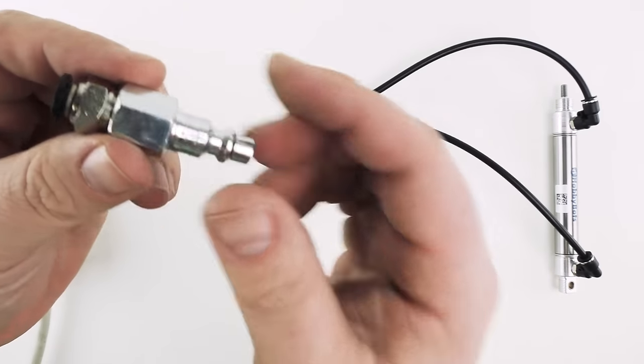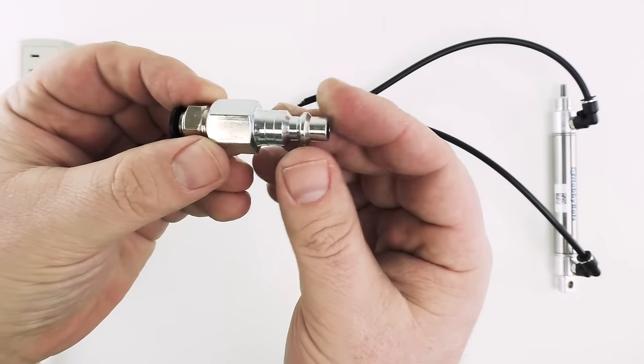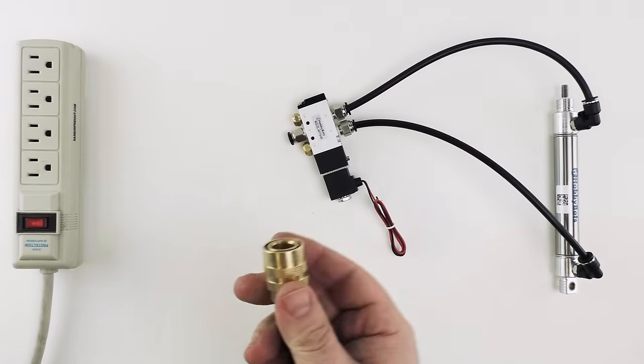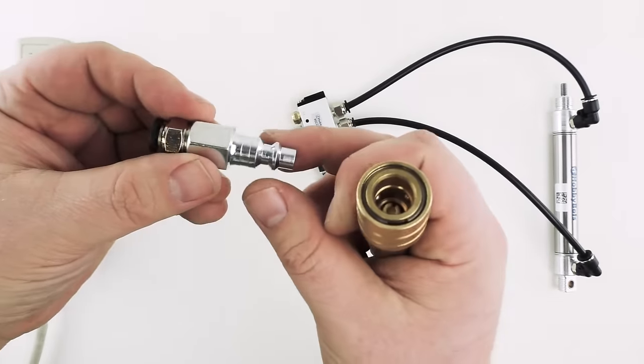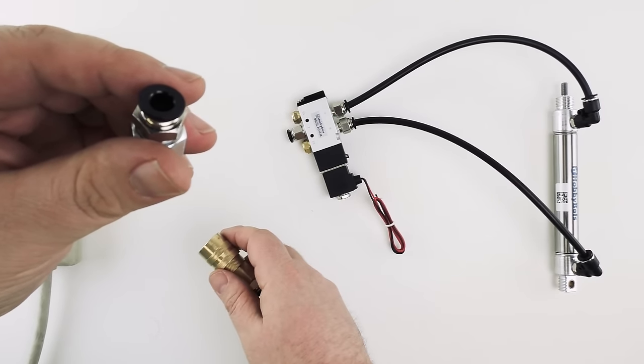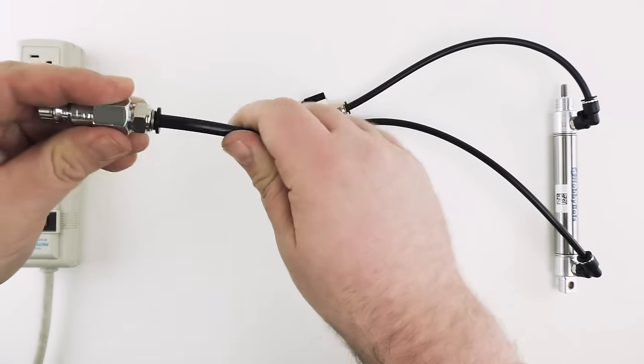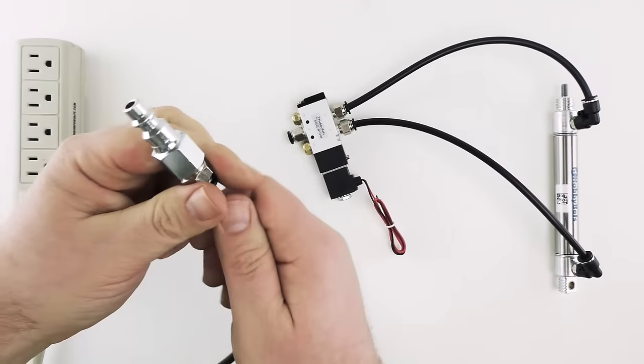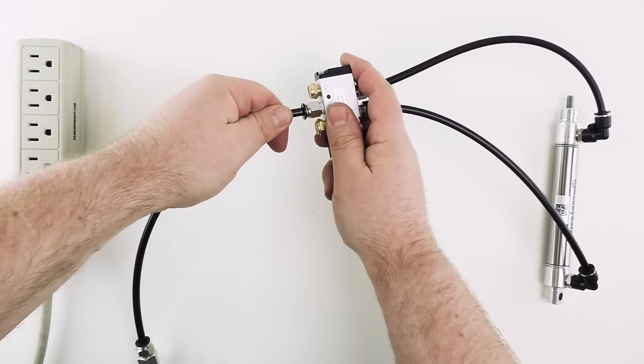To do that we're going to be using a very important but commonly overlooked pneumatic fitting. This is called a quick connect with push on. Now on your air compressor you're going to see a barrel connector similar to this. This fitting is meant to insert into that barrel connector to adapt it to quarter inch air line. So we're going to take another piece of our quarter inch air line. Press it here into this fitting. We're going to attach that to the input of the solenoid.